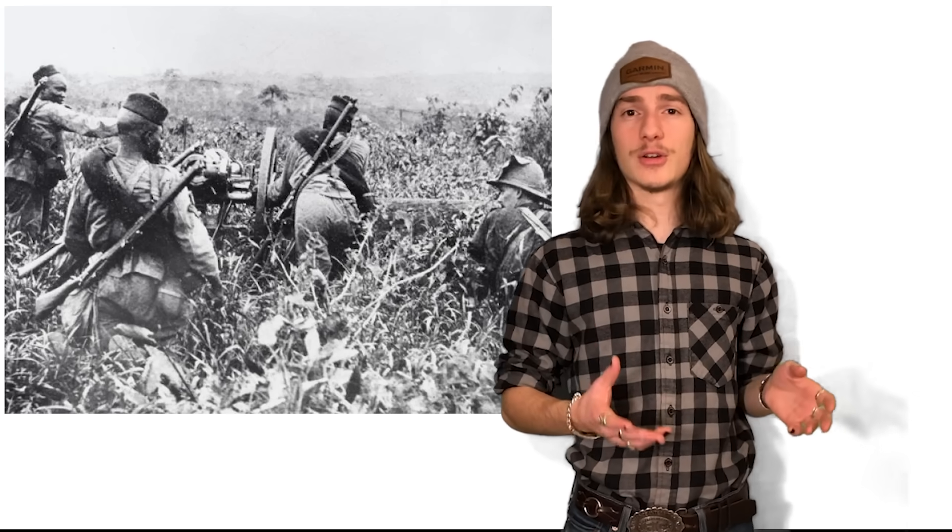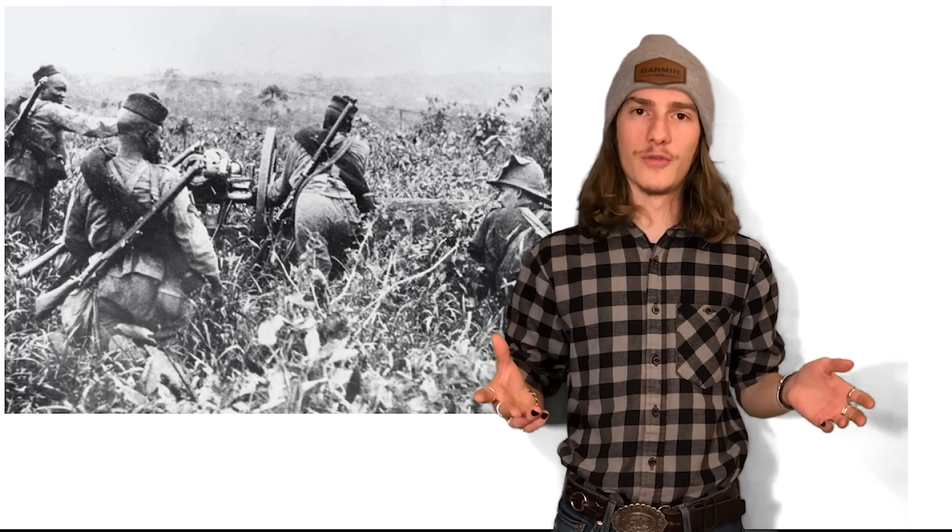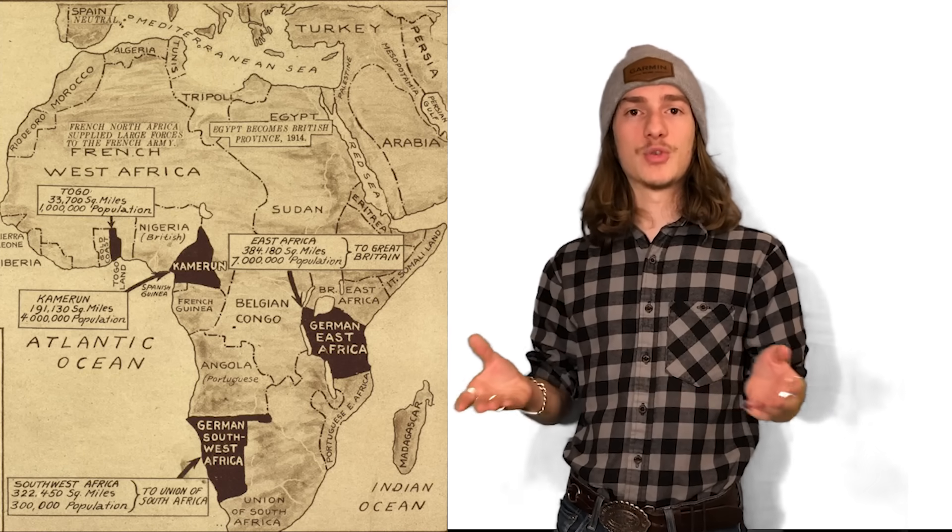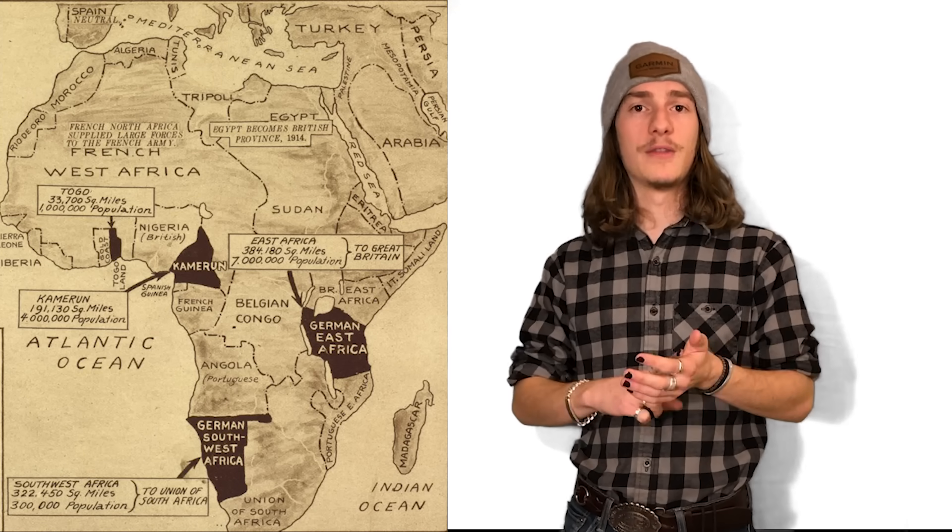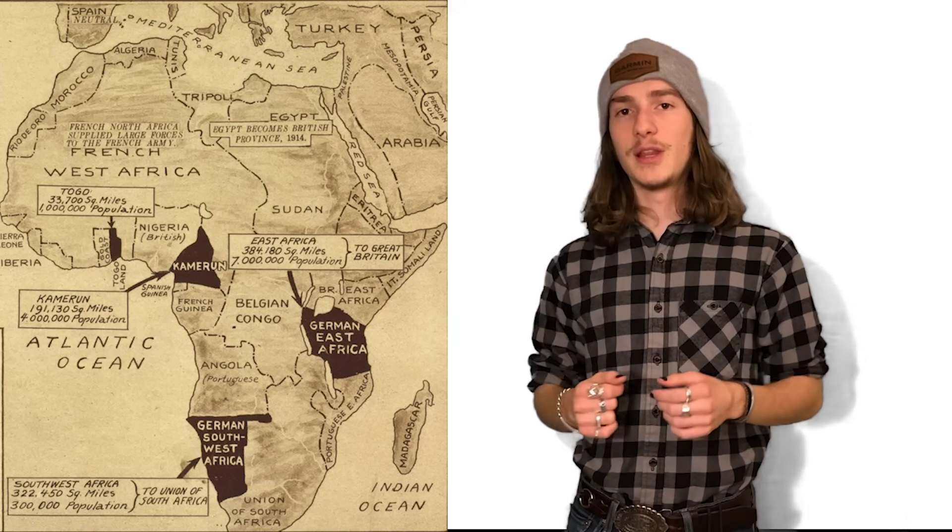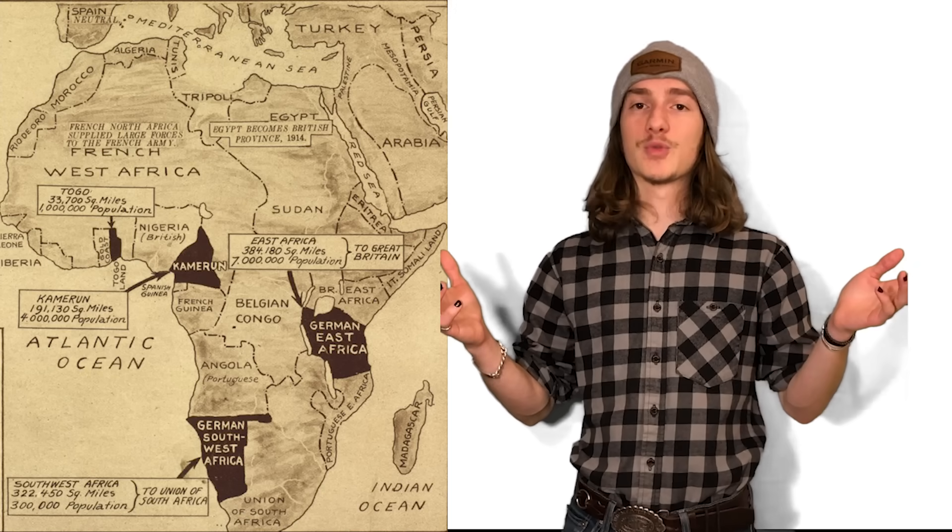Reck himself was taken prisoner later in 1917 and was not released until the war was over. And German East Africa was divided between Belgium, Portugal, and Britain in the Treaty of Versailles. And unfortunately, after leaving German East Africa, Reck's papers were lost forever.